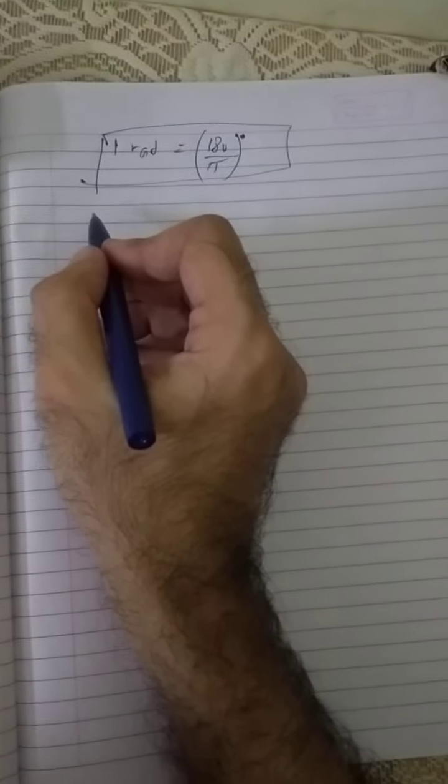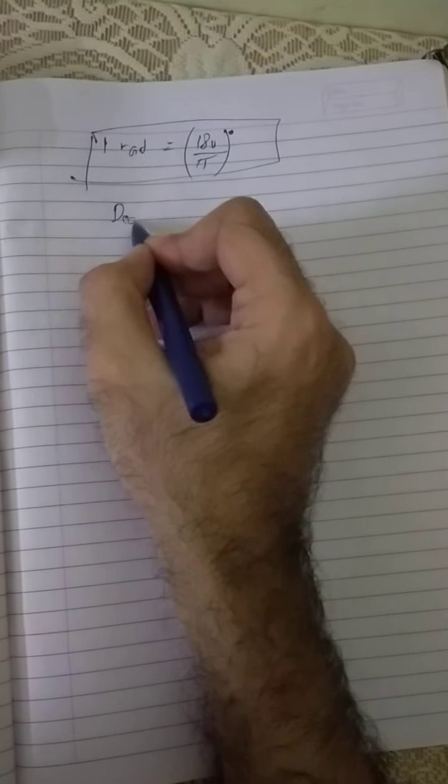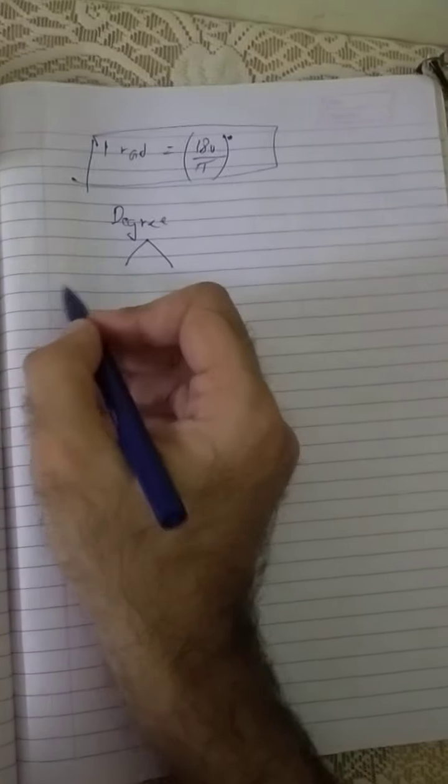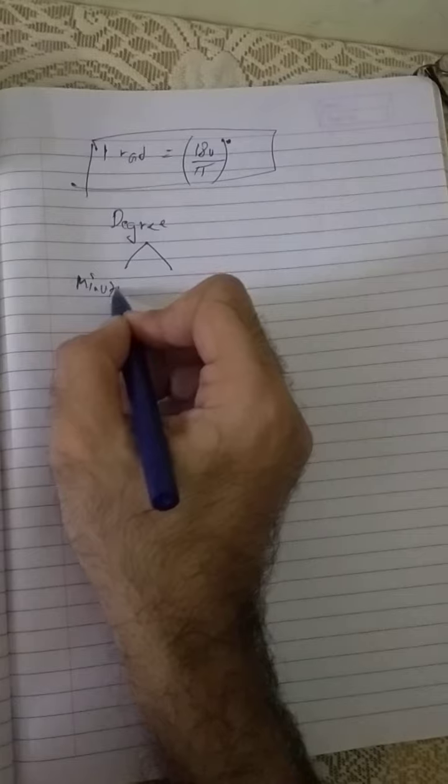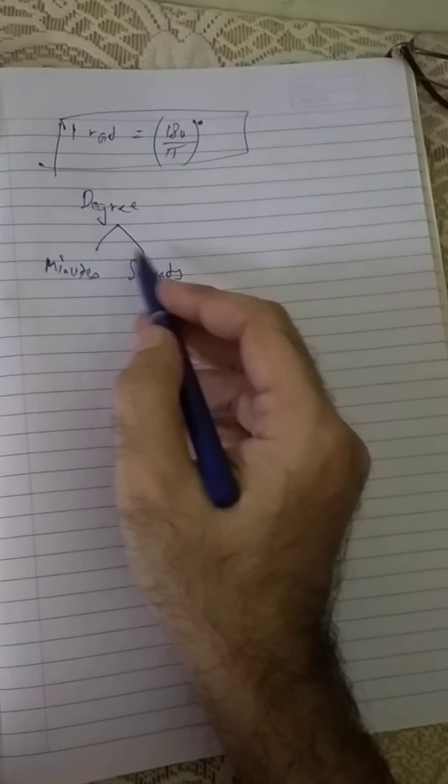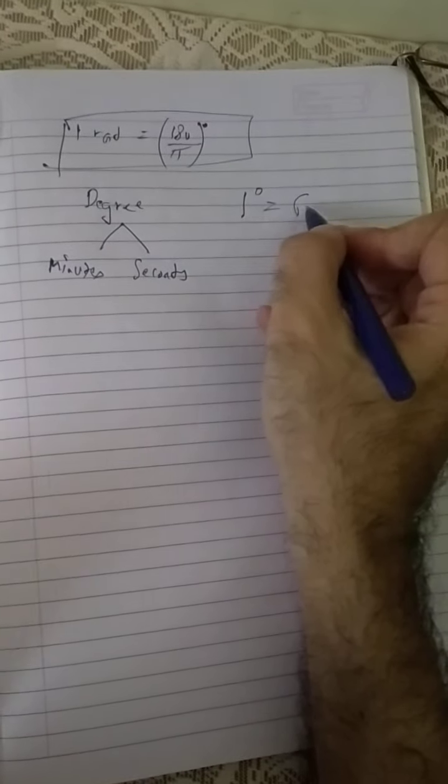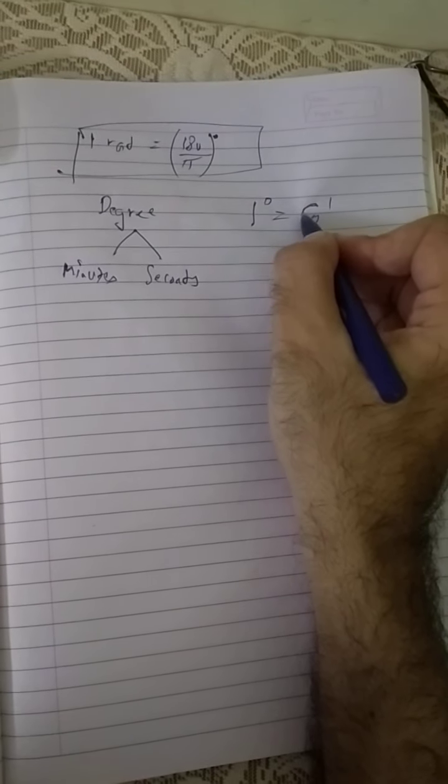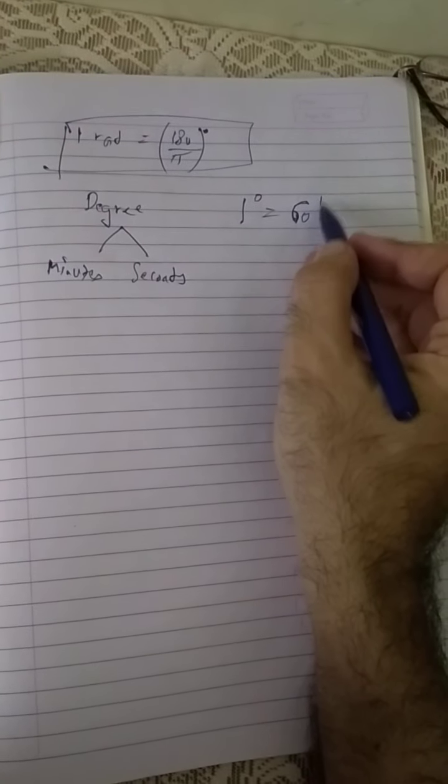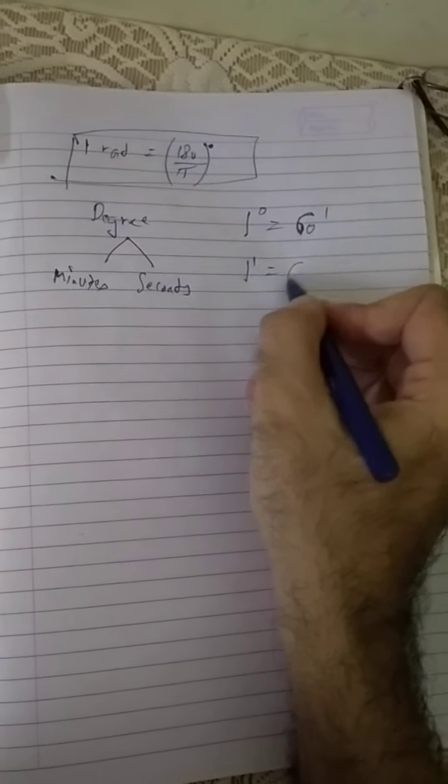The degree is split into some smaller units of angle like minutes and seconds. These are smaller units. We can go to minutes and seconds. What is the relationship? 1 degree equals 60 minutes. These minutes are not time, this is the unit of angle and signified by dash. This is minute, and 1 minute equals 60 seconds.